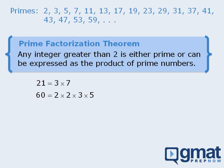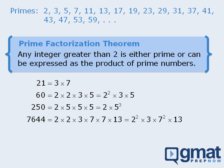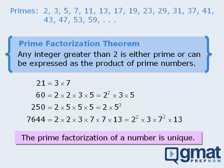This, incidentally, can be written in exponential notation. Here's the prime factorization of 250, and here's the prime factorization of 7,644. An important point about the prime factorization of a number is that it is unique — this is the only way to express 7,644 as the product of prime numbers. As you will see later in this lesson, we can learn a lot about a number by examining its prime factorization, so we need to become proficient at expressing numbers as the product of prime numbers.